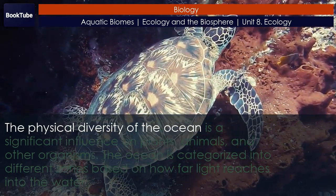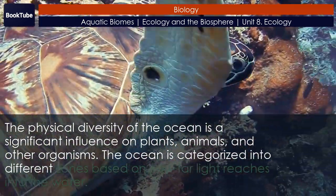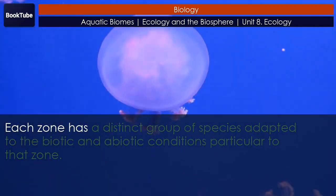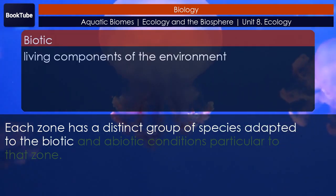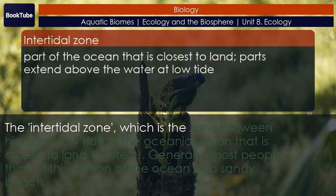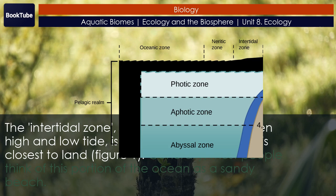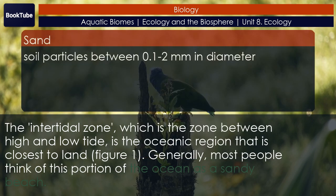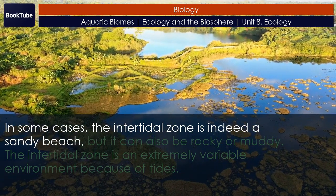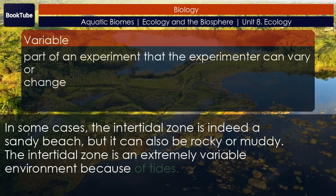The physical diversity of the ocean is a significant influence on plants, animals, and other organisms. The ocean is categorized into different zones based on how far light reaches into the water, and each zone has a distinct group of species adapted to the biotic and abiotic conditions particular to that zone. The intertidal zone — the zone between high and low tide — is the oceanic region closest to land. Generally most people think of this portion of the ocean as a sandy beach, but it can also be rocky or muddy. The intertidal zone is an extremely variable environment because of tides.